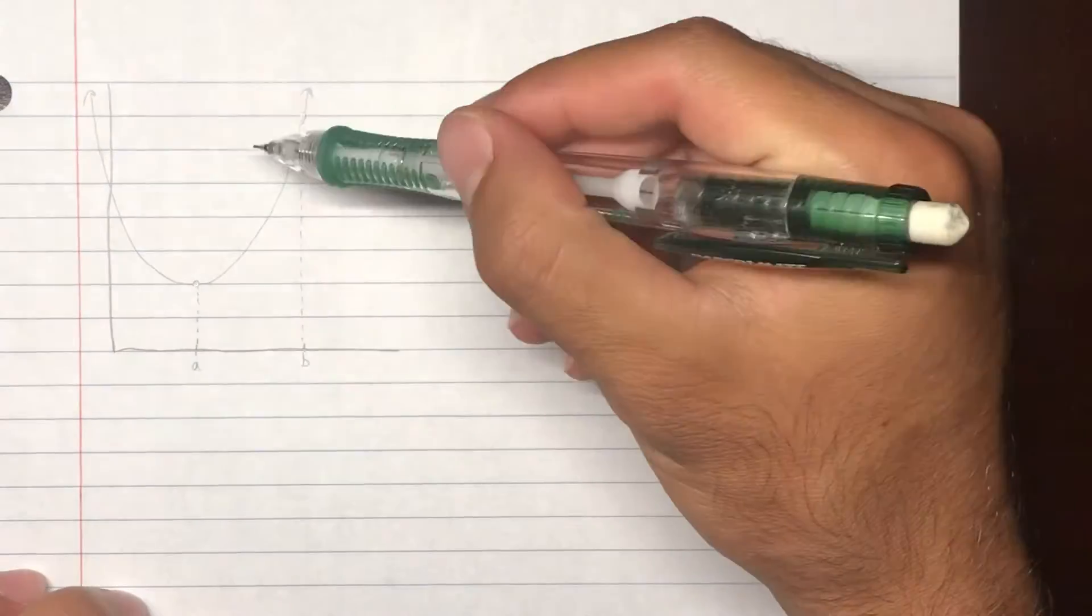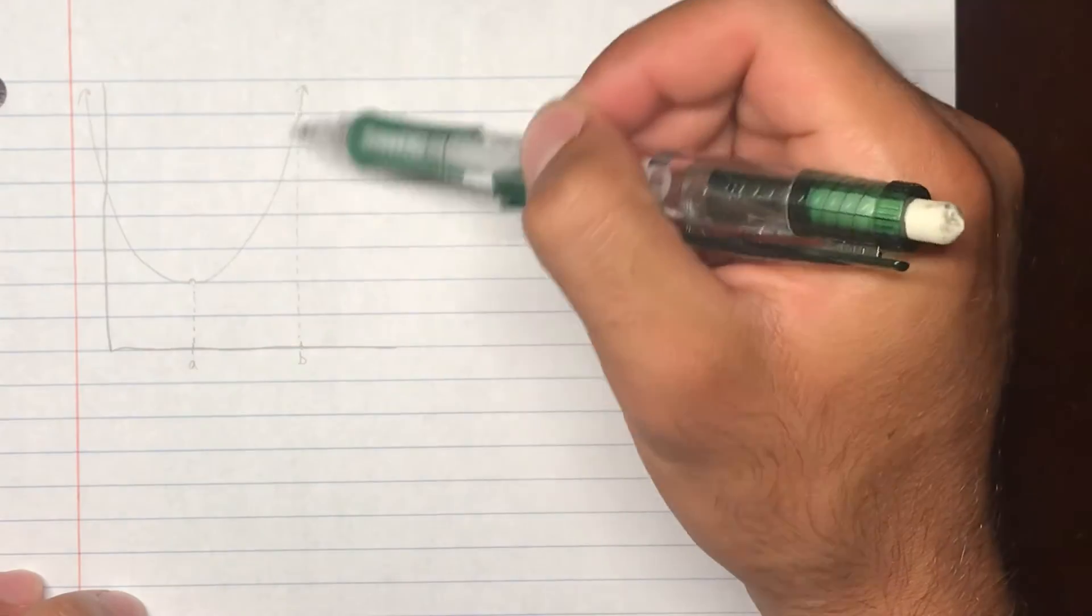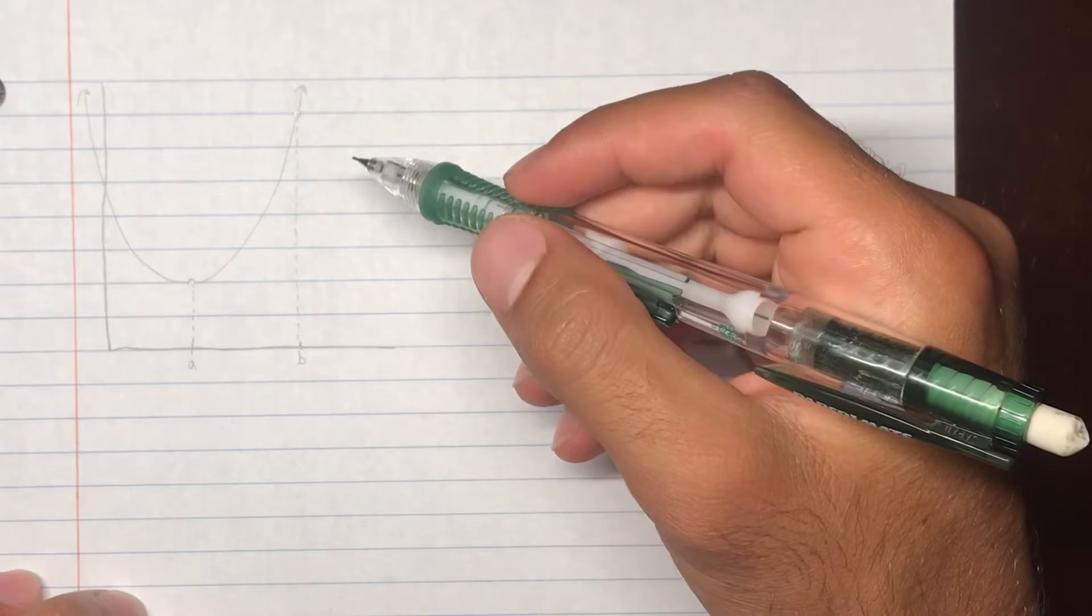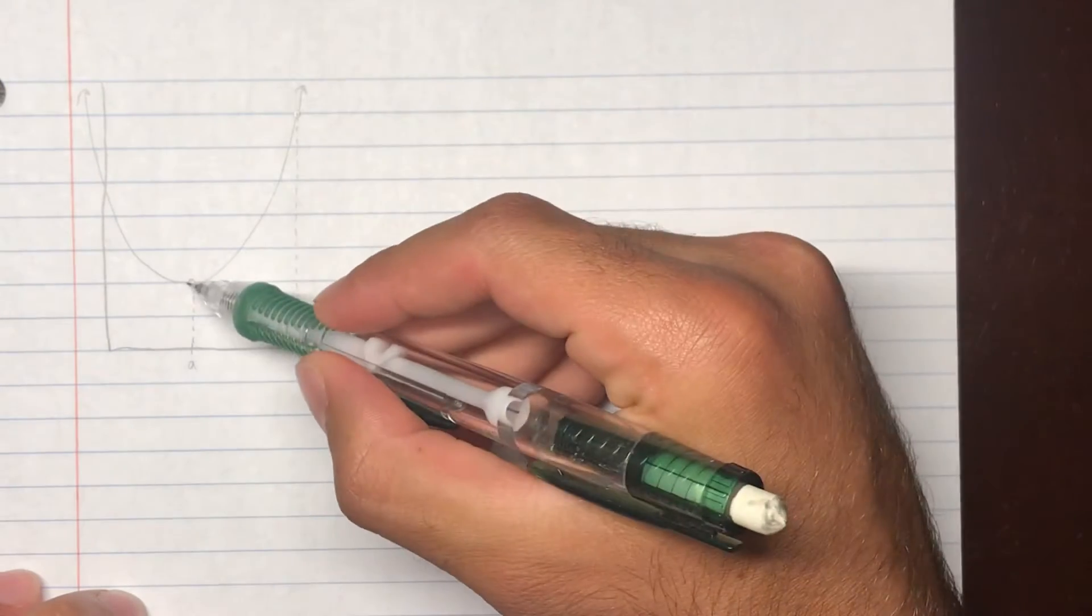So let's say this right here is a graph of a function of x, y equals f of x. And we're trying to find the length of the curve from point A to point B.